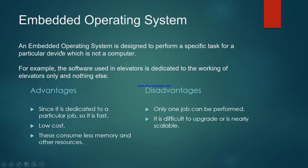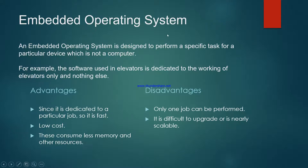The advantages of the embedded operating system are that since it is dedicated to a particular job, it will obviously be fast, its cost will be low, and it consumes less memory and other resources because its task is very specific. The disadvantage is that only one job can be performed and it is difficult to upgrade — it is nearly not scalable.